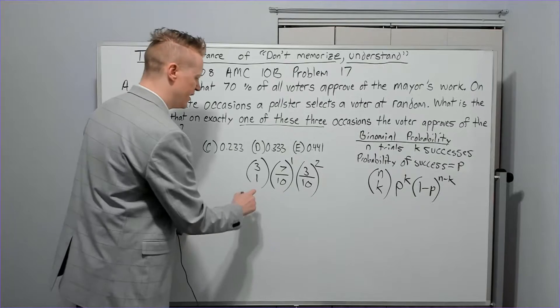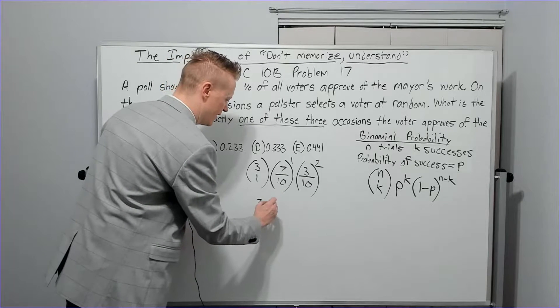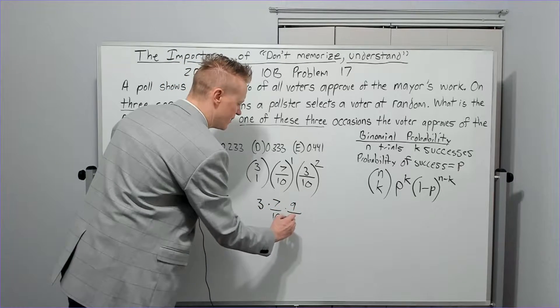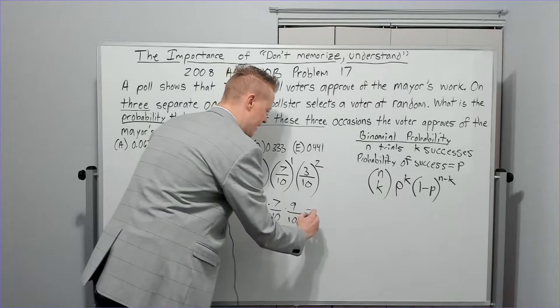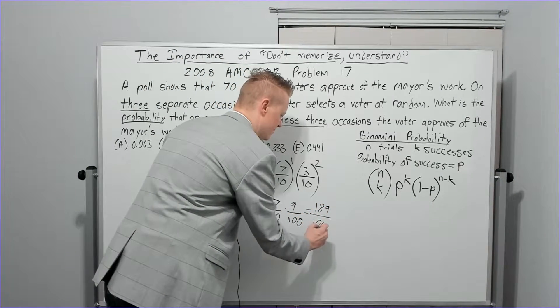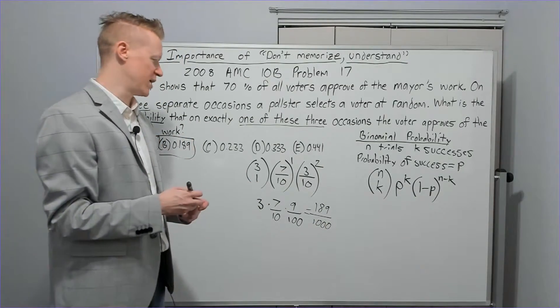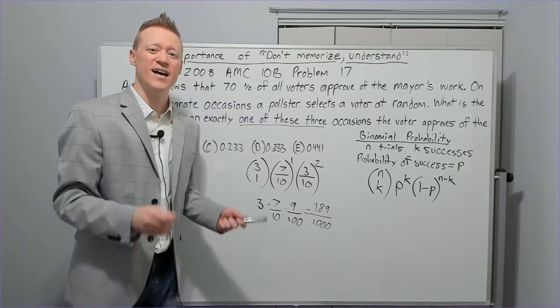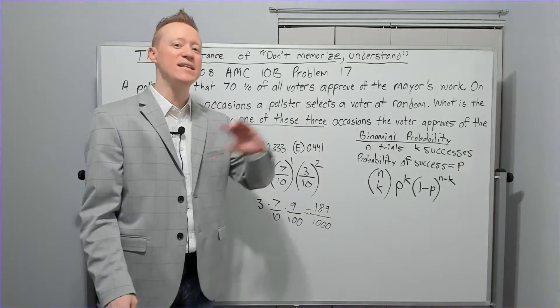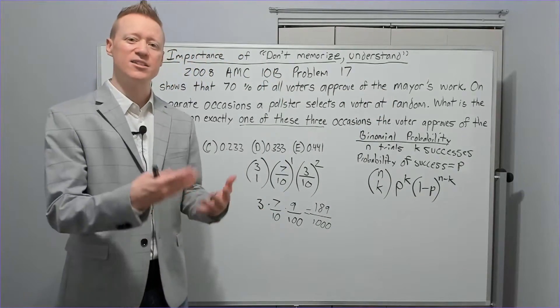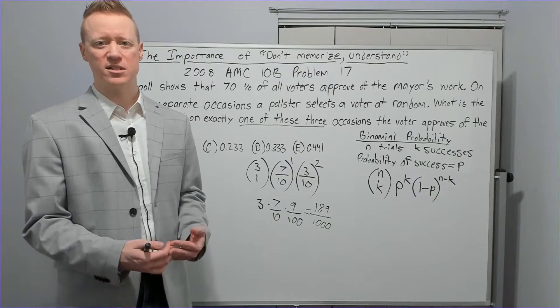Let's kind of see what's going on here. Three choose one is three, and then seven over 10 times nine over a hundred because we're squaring it. It's going to give you 63 times three, which is 189 over a thousand. And as you know, that's three decimal places and it gives you answer choice B. Easy peasy, right? No problem. Why does this work? That's the question when you're doing past test review. This is so important. You cannot just get an answer or see how it's done and be done with it and move on. You need to process. You need to understand what's going on. Why does this work?